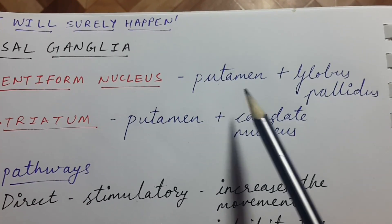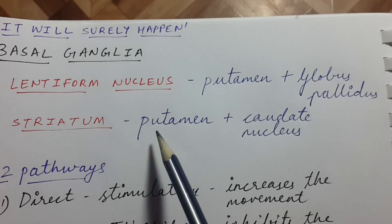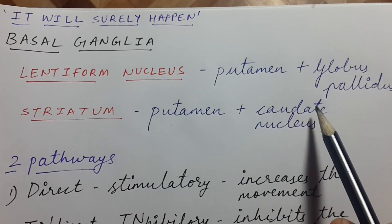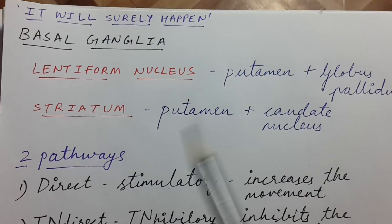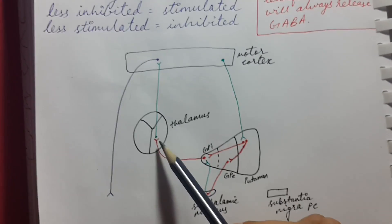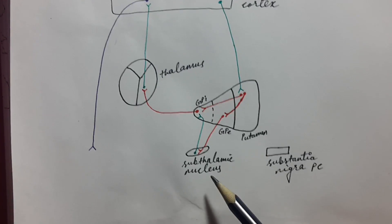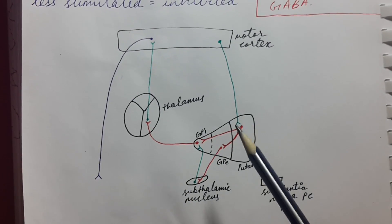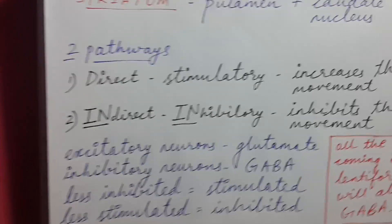Putamen and globus pallidus together form the lentiform nucleus, and putamen and caudate nucleus together form the striatum. The caudate nucleus does not take part in any kind of motor activity, so we will not discuss it in detail. The main components of basal ganglia are the thalamus, lentiform nucleus (putamen and globus pallidus), subthalamic nucleus, and substantia nigra.